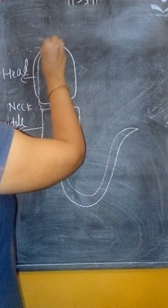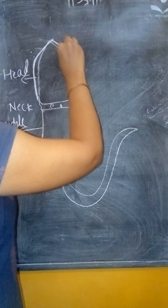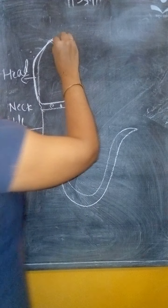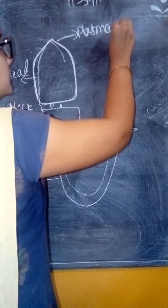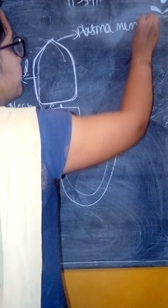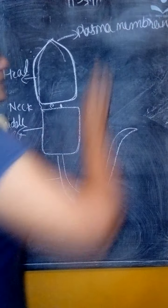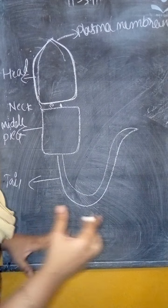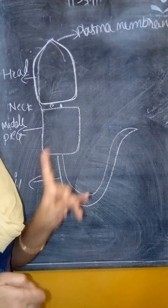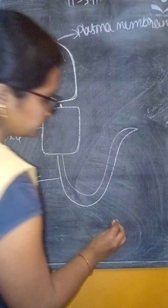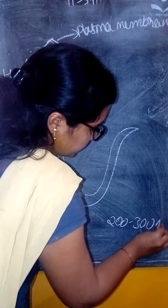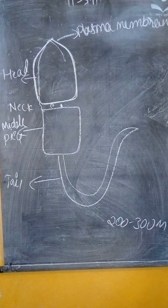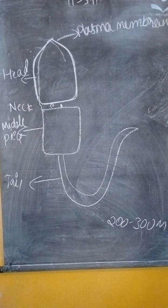This outer layer is the plasma membrane. In one ejaculation, 200 to 300 million sperm are released.